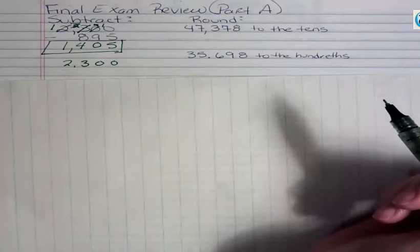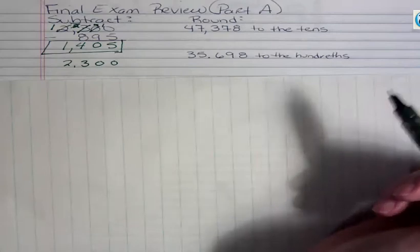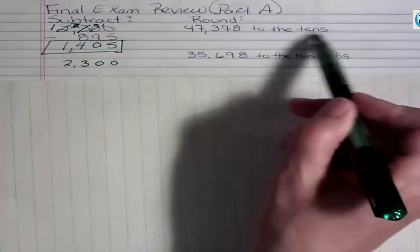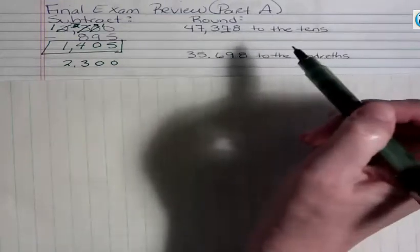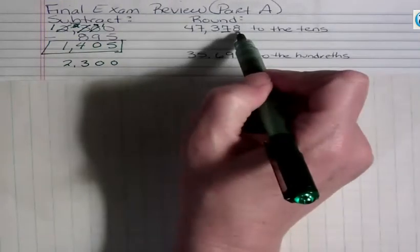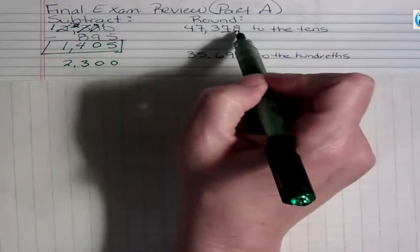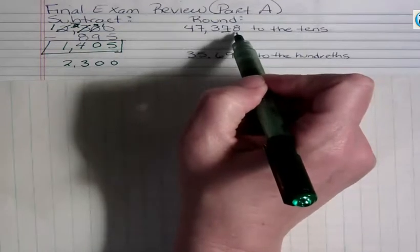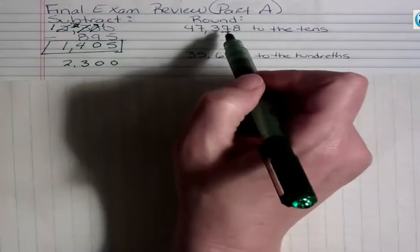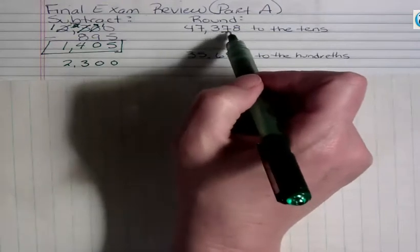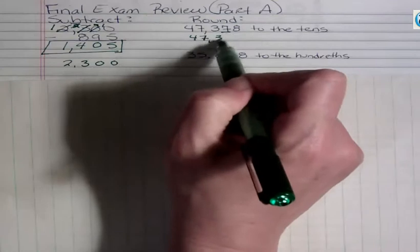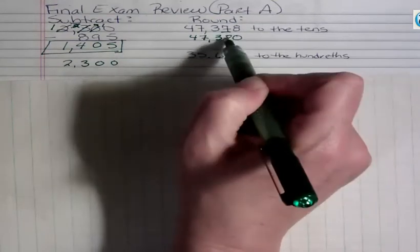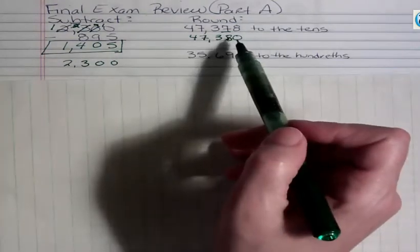When you are rounding to any number, you're looking at the number to the right of where you're headed. So to round this to the 10s, I look at the 10s place, and I look 1 to the right. If that number is 5 or greater, I round up, and if it's less than 5, I would stay the same. In this case, the 8 is more than 5, so I would have 47,380. When you're rounding with whole numbers, you put 0s on the end.